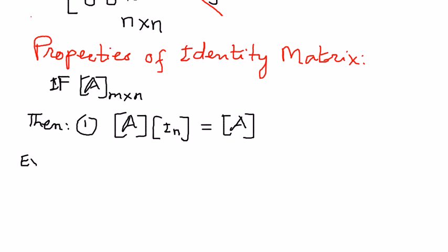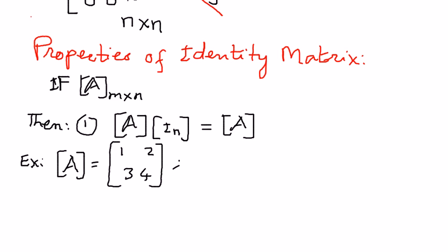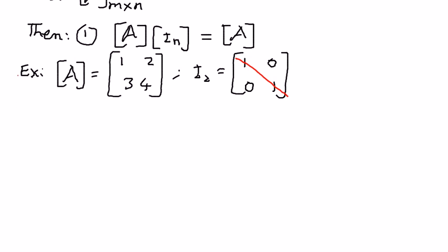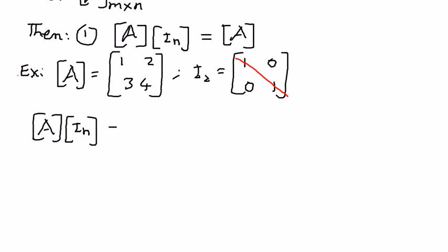Let me explain this with an example. Let's say A is a matrix with elements [1, 2; 3, 4], and I2 is a 2 by 2 identity matrix with 1s along the main diagonal. If we multiply these two out — taking [1, 2; 3, 4] times [1, 0; 0, 1] — that is what this property is telling us.